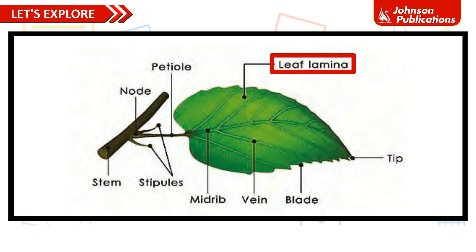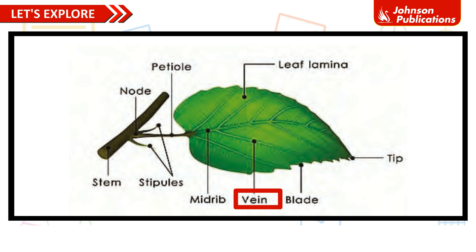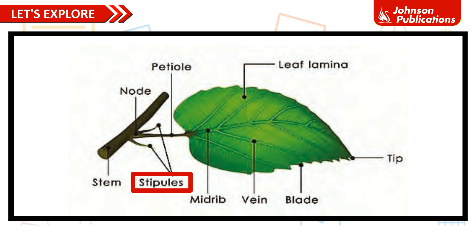Leaf parts: petiole, leaf lamina, tip, blade, vein, midrib, stipules, stem, node.